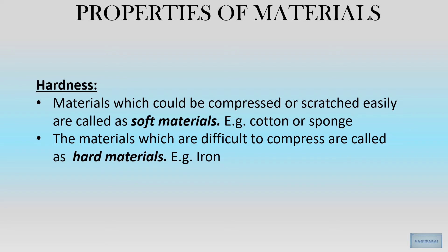Properties of a material can also be determined using hardness. Take a material and start compressing it, squeeze it, or scratch it. If you are able to squeeze or scratch it easily, that material is soft — for example, cotton and sponge. But if the material is very hard to squeeze, it is a hard material, like iron.